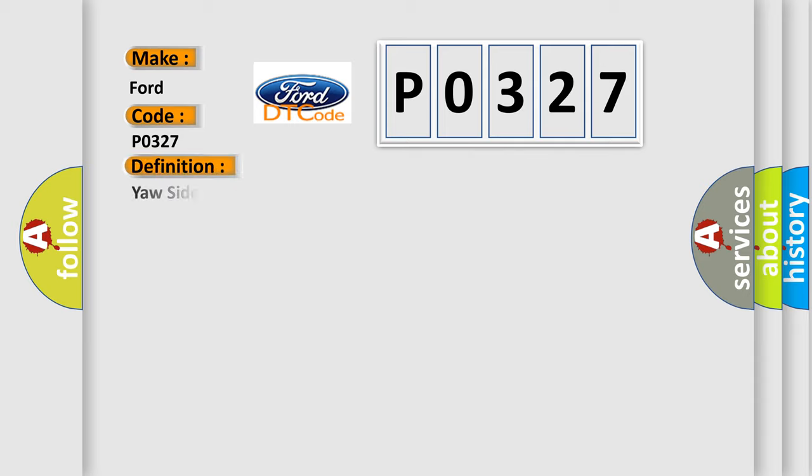The basic definition is: Your side G sensor circuit. And now this is a short description of this DTC code.